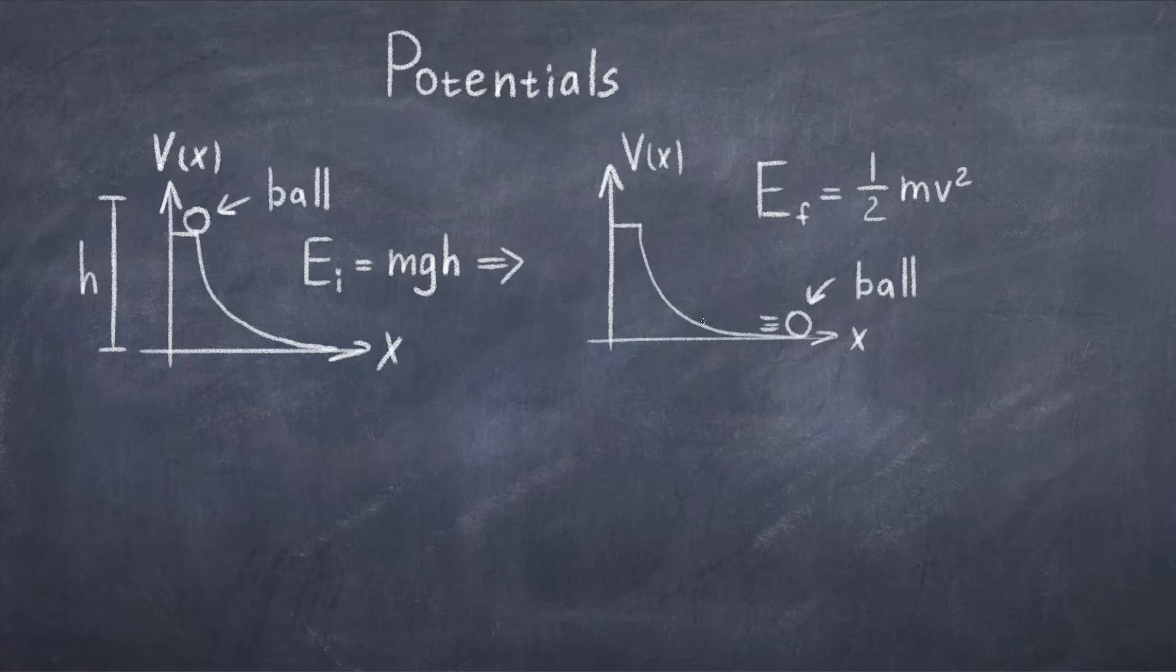At the bottom of the hill, the potential energy will be zero, and all the energy will now be kinetic. Thus the final energy can be written as the kinetic energy, e final equal to 1 half m times v squared. And from conservation of energy, this must be equal to the initial energy. Thus e initial is equal to e final, or mgh is equal to 1 half m v squared. Thus in such a potential, the energy is moving between being potential energy and kinetic energy.